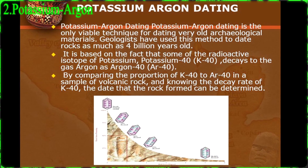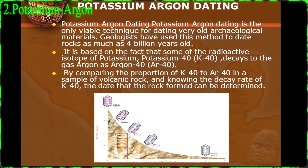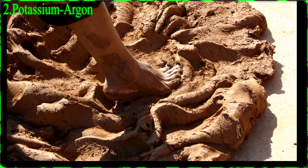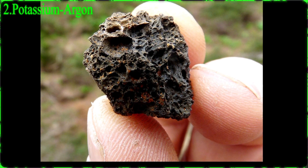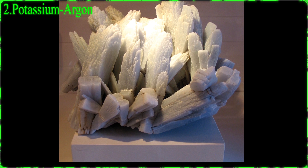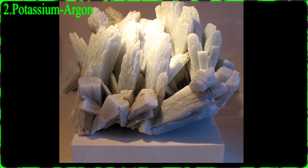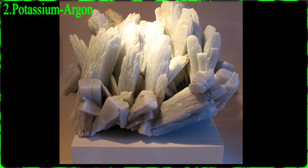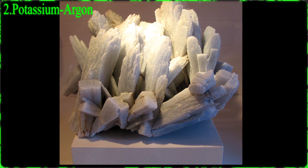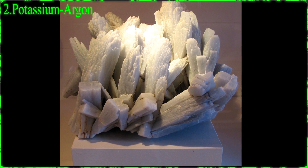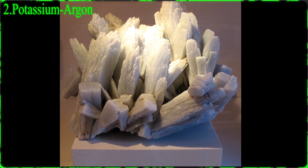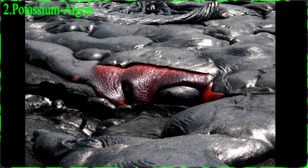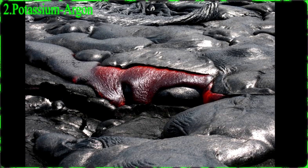Potassium is a very common element found in many materials such as clay minerals, tephras, and evaporites. In these types of materials, the decay product argon is able to escape the molten rock, but as the rocks solidify, it starts to slowly accumulate.